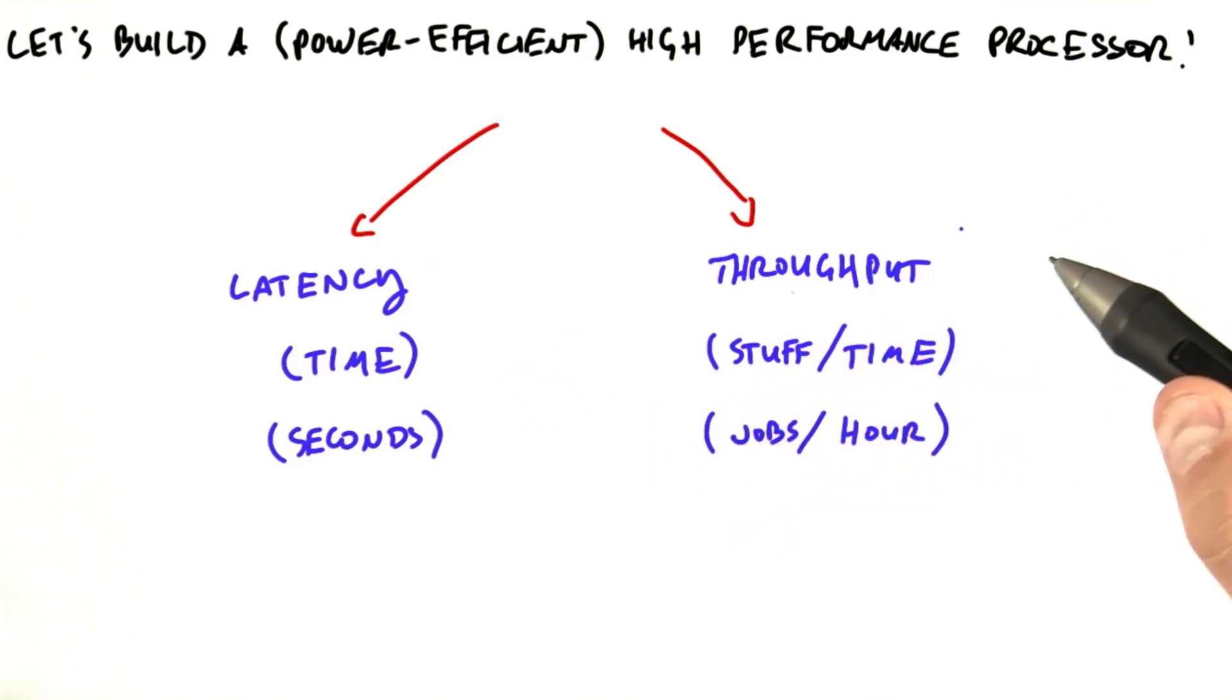The other choice is throughput. Throughput is tasks completed per unit time. And we measure throughput in units as stuff per time, like jobs completed per hour.